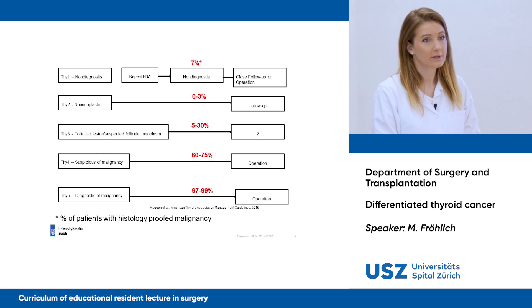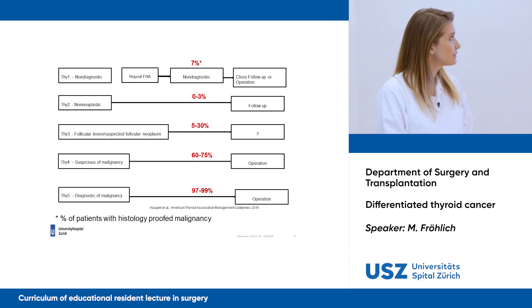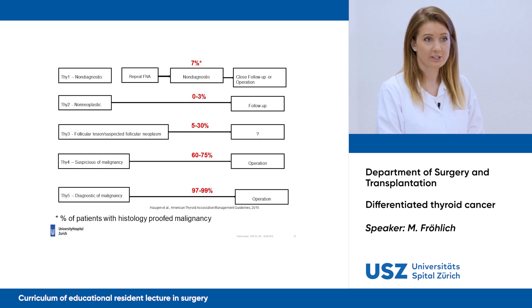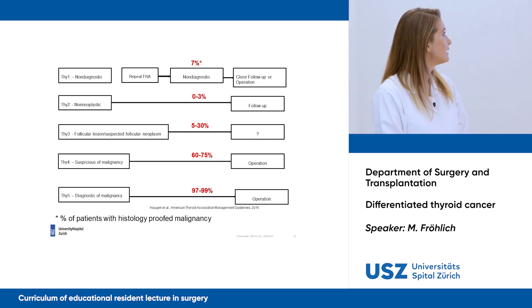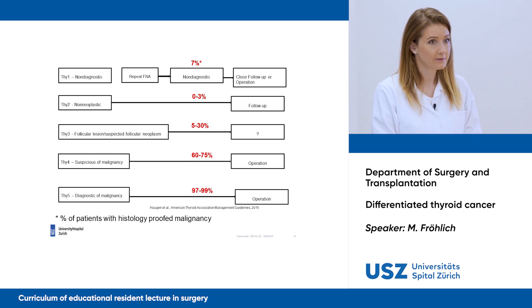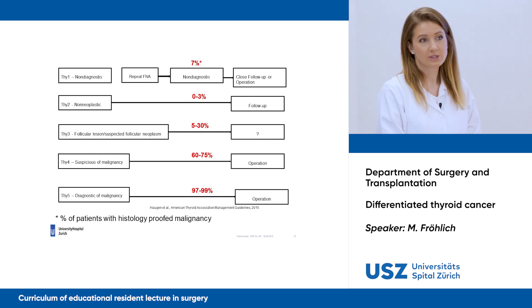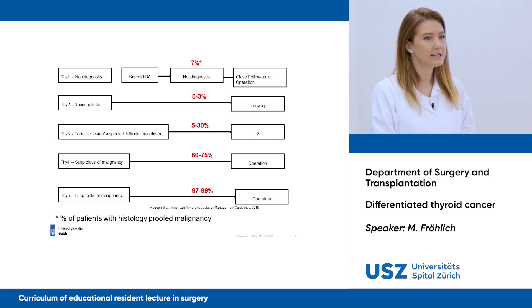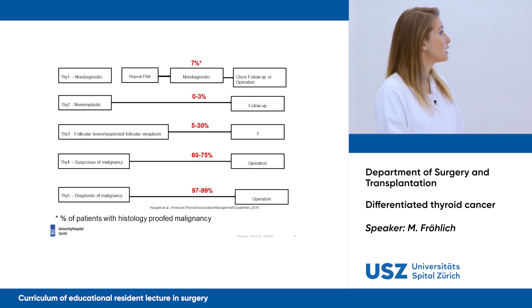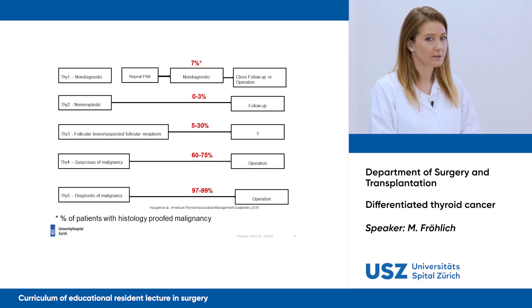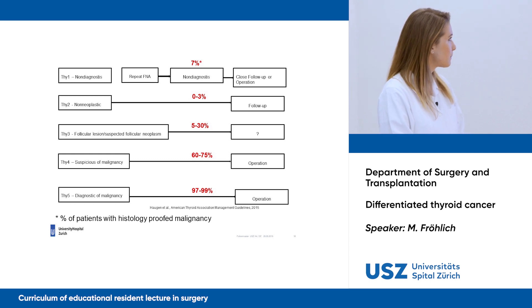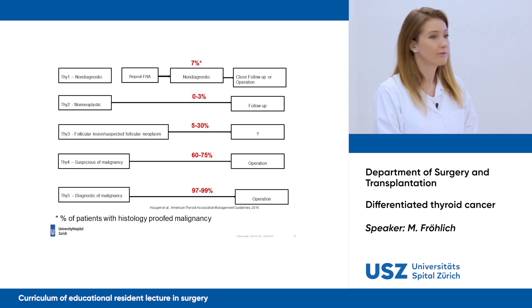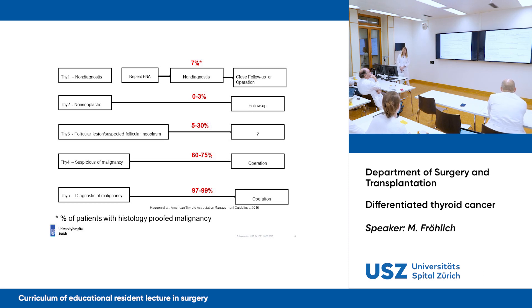For Ty1, you should go for close follow-up by ultrasound or discuss an operation if there are changes in follow-up. Ty2 is a non-neoplastic finding — you should just do a follow-up. Ty3 shows follicular lesions but it's not clear what to do — I will tell you more about this later. For Ty4 and Ty5, we have a diagnosis of malignant changes in cytopathology, and that's why we should go for operation.